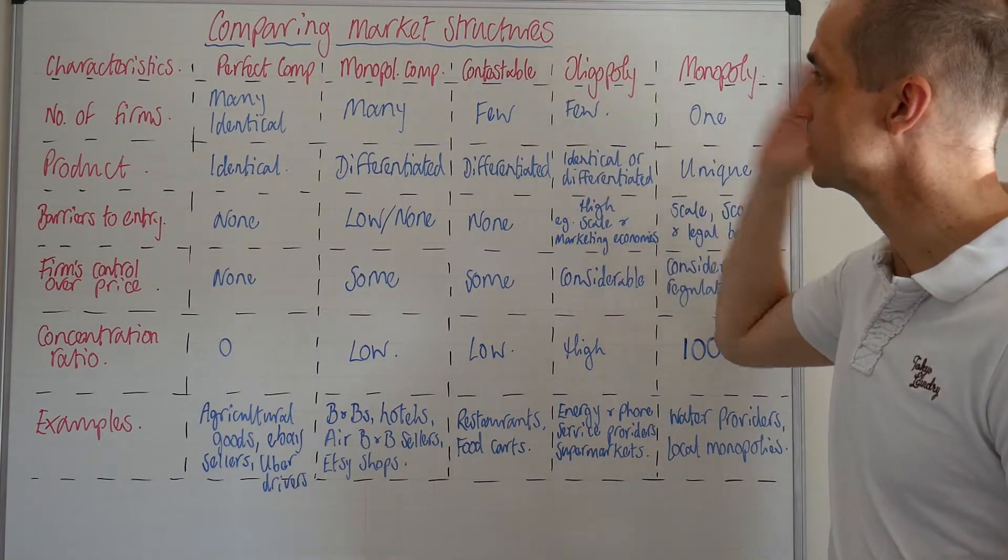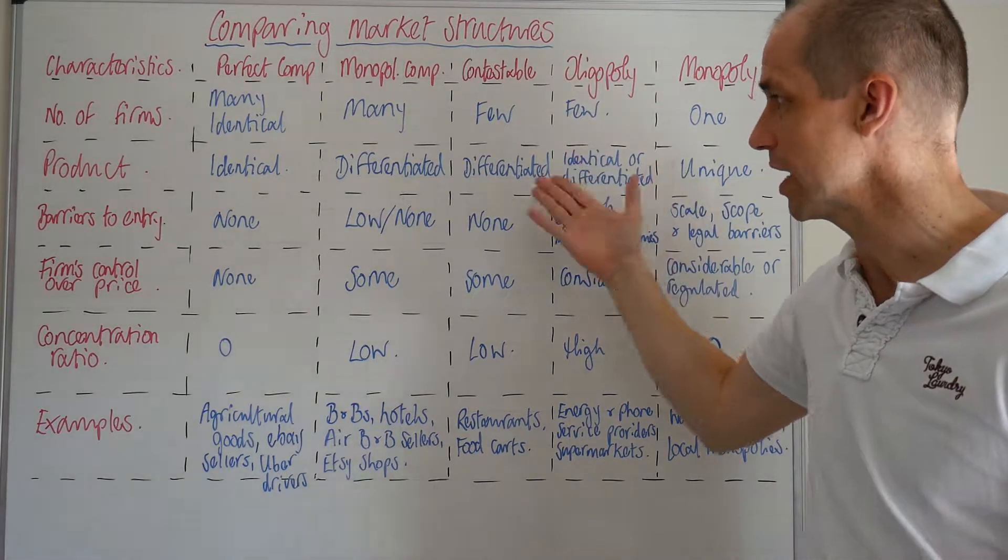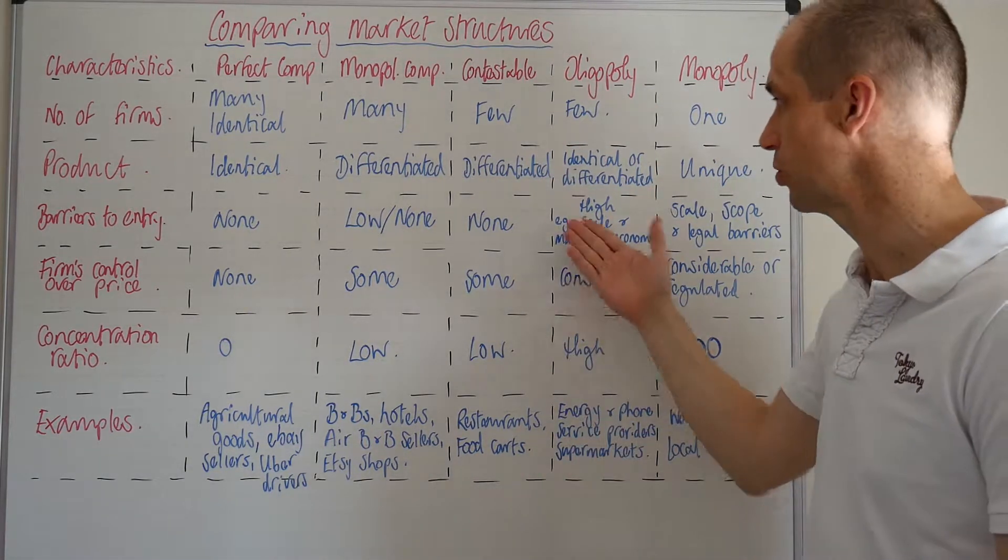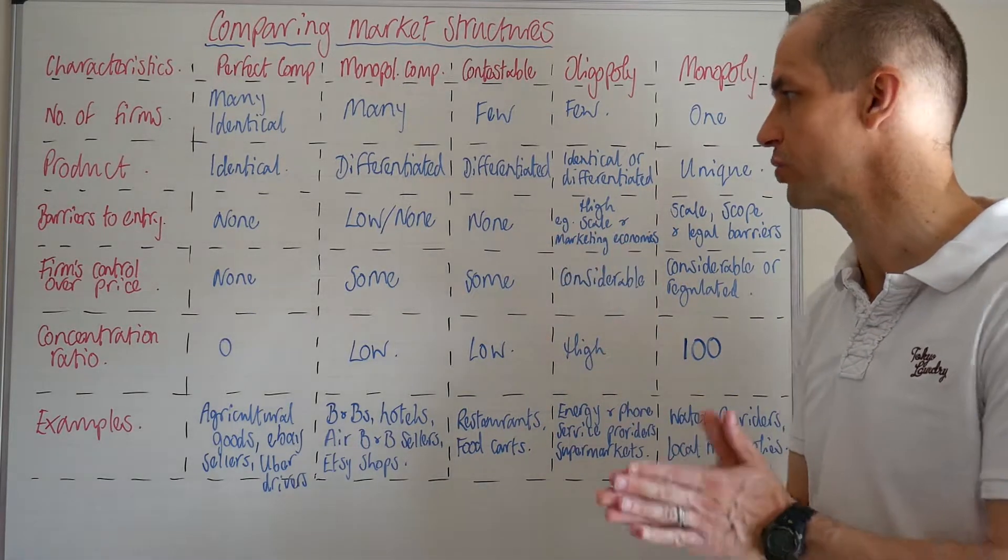So then we've got contestable markets. We've got few firms. We've got a differentiated product in all likelihood. No barriers to entry or low barriers to entry.